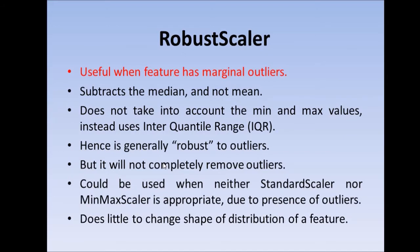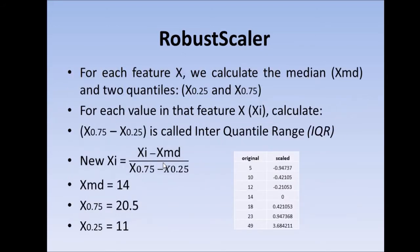Now, when we use RobustScaler, what we do is we will subtract by the median and we will divide it by the interquantile range. Now, what is interquantile range? It is the difference between the 75th quantile and the 25th quantile.